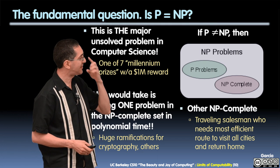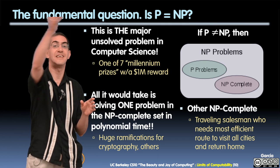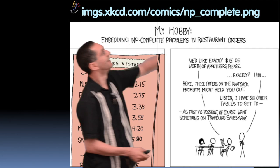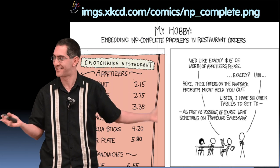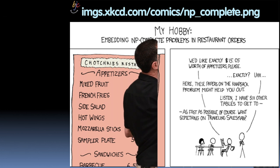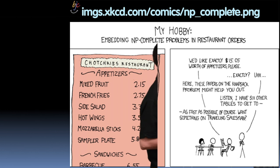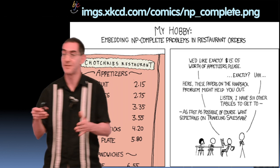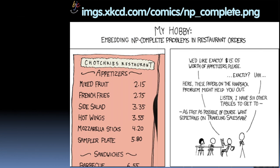Other NP-complete problems include the traveling salesman problem: visit every city in the most efficient route and come back home. There's a funny XKCD comic — 'my hobby: embedding NP-complete problems in restaurant orders.' The conversation: 'We'd like exactly $15.05 worth of appetizers, please.' That's the knapsack problem. The waiter says 'I have six other orders — do you want something on the traveling salesman? Because that's also NP-complete — solve that one, you solve this one.'